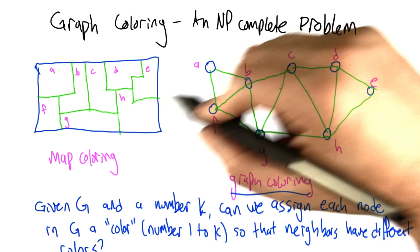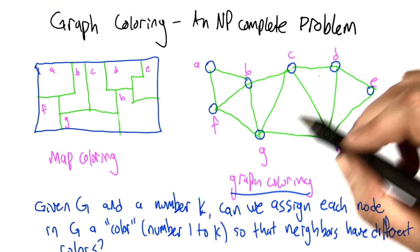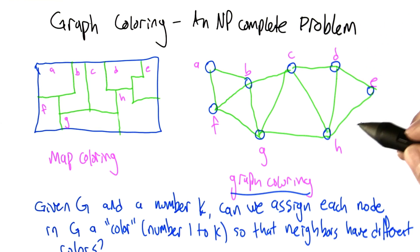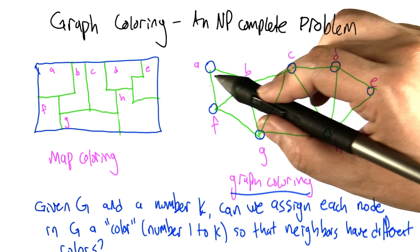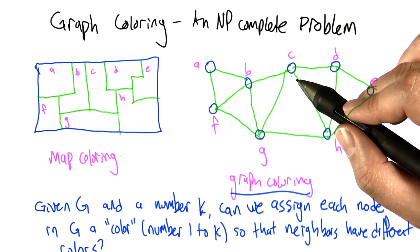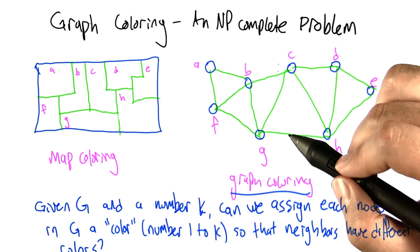So given that transformation, the equivalent graph coloring problem is going to be: given a graph G and some number K, can we assign each of the nodes in the graph a color, specifically some number from 1 to K, so that neighbors in the graph have different colors, have different numbers assigned to them.